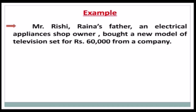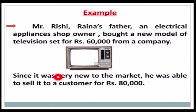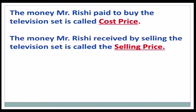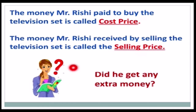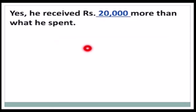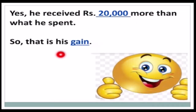Here is an example. Mr. Rishi's father, an electrical appliances shop owner, bought a new model of television set for rupees 60,000 from a company. Since it was very new to the market, he was able to sell it to a customer for rupees 80,000. The money paid to buy the television set is called the cost price, and the money received by selling it is called the selling price.